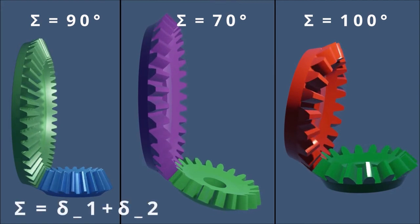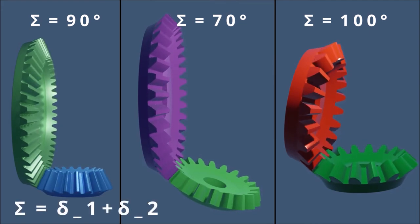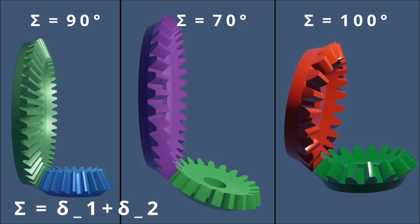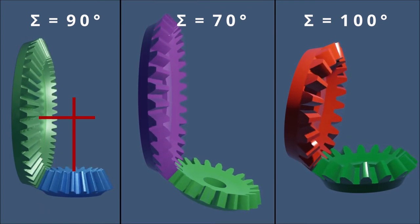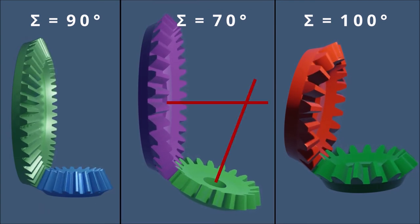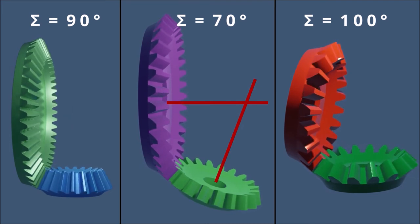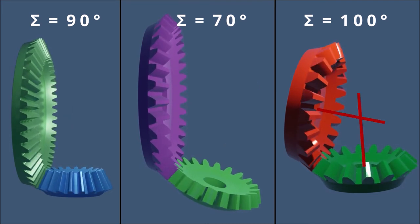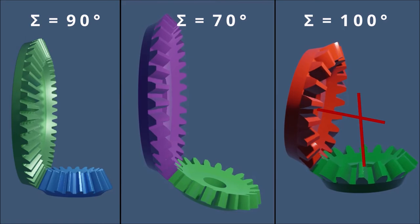The cones of the bevel gears meet in a specific point with a specific cutting angle. This cutting angle is often referred to as sigma and calculated by the individual cone angles delta 1 and delta 2. Two bevel gears in mesh are called a bevel gearing, as you can see here. The pitch cone angles of the gear and pinion are determined by the angle of the intersecting axes.